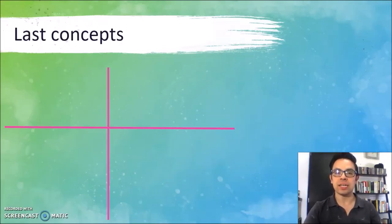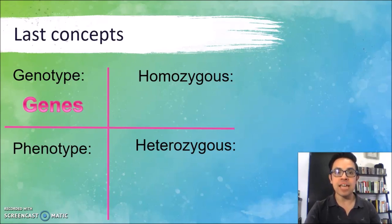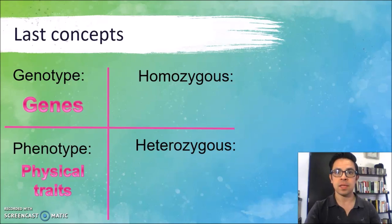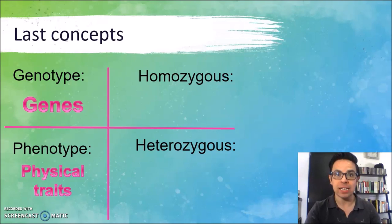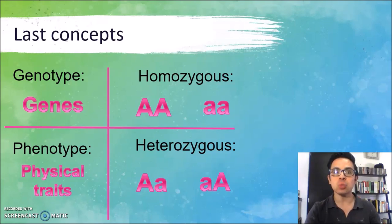A couple more concepts that you need to understand are genotype, phenotype, homozygous, and heterozygous. The first three letters will give you the hint of the definition. Genotype will be all the genes, or the genetic composition of an organism. Phenotype will be the physical properties — in other words, the physical traits that we can see in an organism. Homozygous — remember that homo means same — would be when the homologous chromosomes have the same alleles or alleles with the same strength; it could be two dominant alleles or two recessive alleles. Heterozygous — remember that hetero means different — would be when different alleles are located in the homologous pair of chromosomes; in this case, alleles with different strengths: one dominant and one recessive.